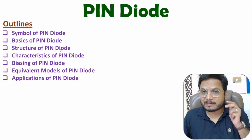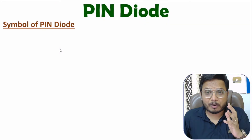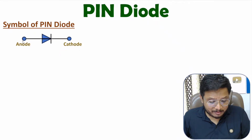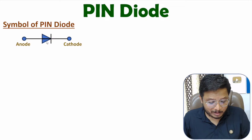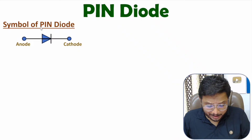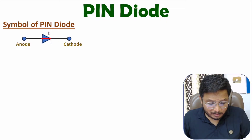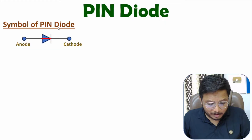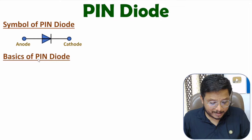Let us begin this session with the first agenda: the symbol of PIN diode. PIN diode is a two-terminal device — anode and cathode. The symbol of PIN diode is similar to the symbol of a PN junction diode, but with an additional line. So with the PIN diode symbol, that additional line is the key distinction you need to remember.